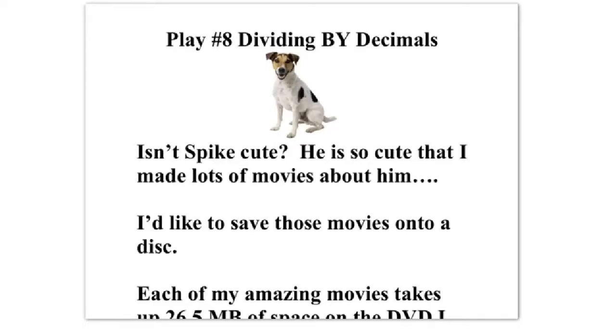We've already done decimals divided by whole numbers, which is pretty easy. Just raise the decimal to the roof and divide like normal. Now we have to divide a decimal by a decimal. And you're probably thinking, why would I ever do this? Or when does this happen? Well, so let me tell you a little story about my little dog Spike.